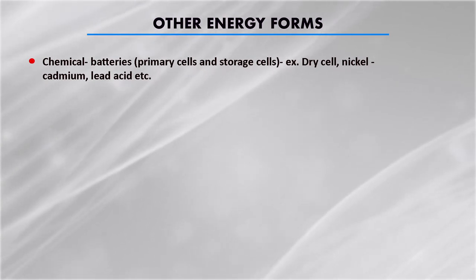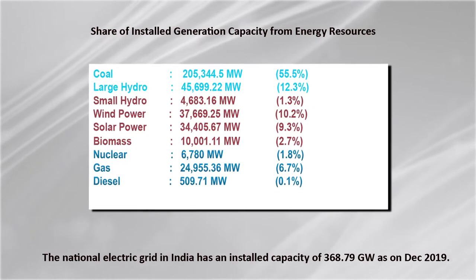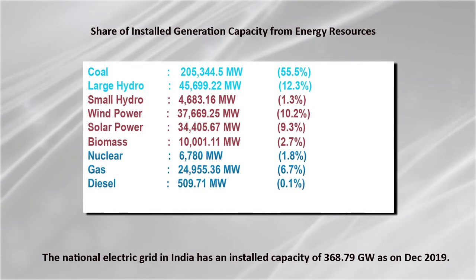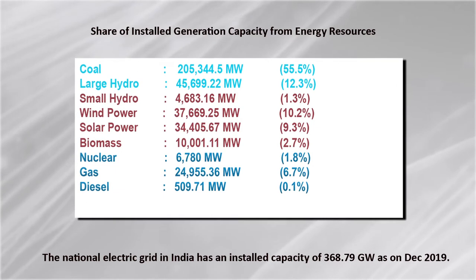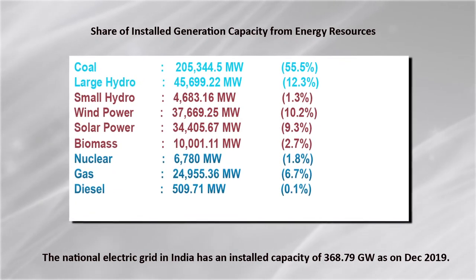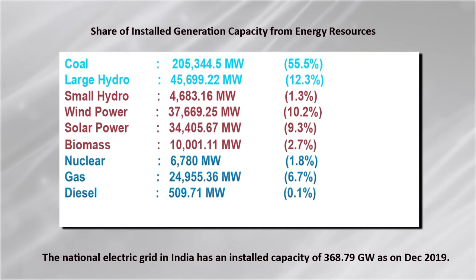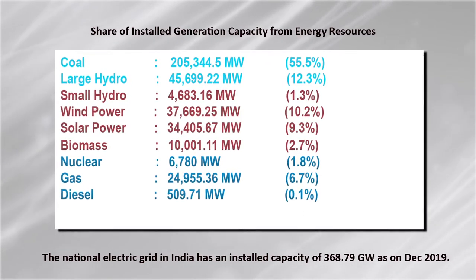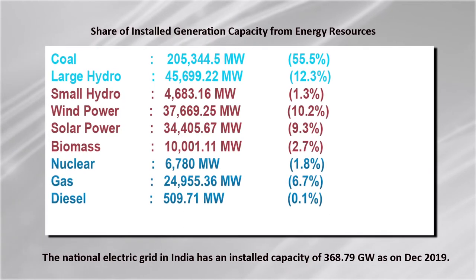Chemical energy can also be converted into electrical energy — like in batteries, primary cells, or storage cells such as dry cells, nickel cadmium, or lead acid batteries. In India, the national electric grid has an installed capacity of almost 370 gigawatt as of December 2019. The share of generation capacity by source is: coal 55.5%, large hydro 12.3%, small hydro 1.3%, wind power 10.2%, solar power 9.3%, biomass 2.7%, nuclear 1.8%, gas 6.7%, and diesel 0.1%.